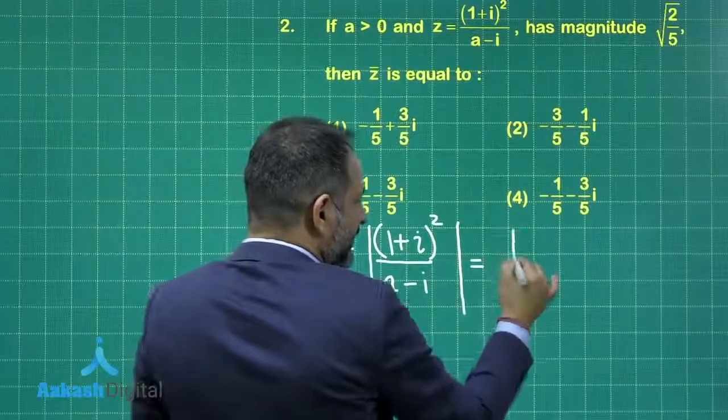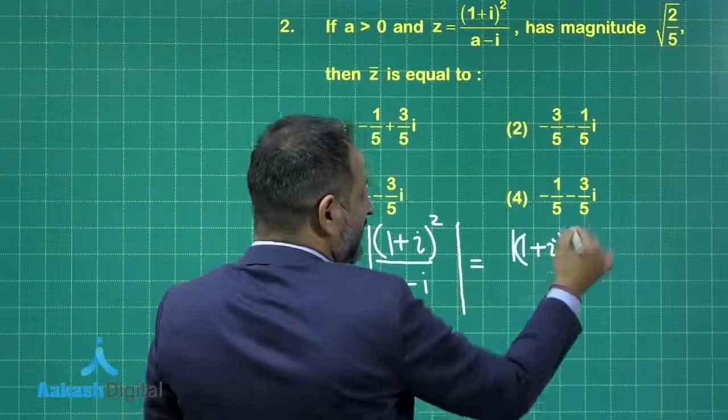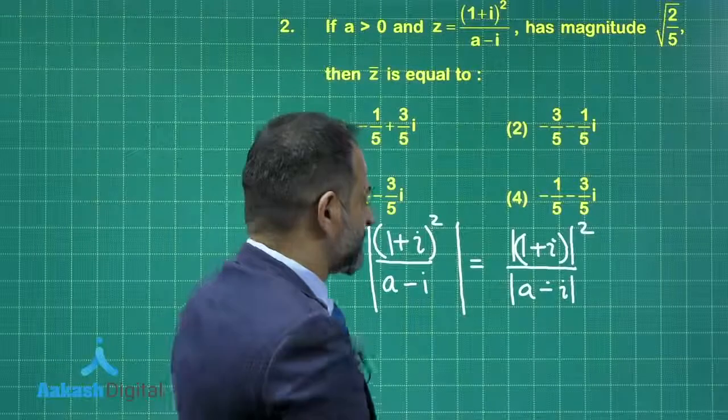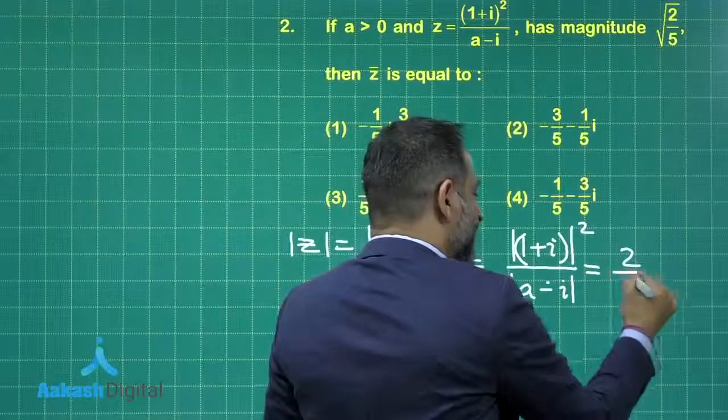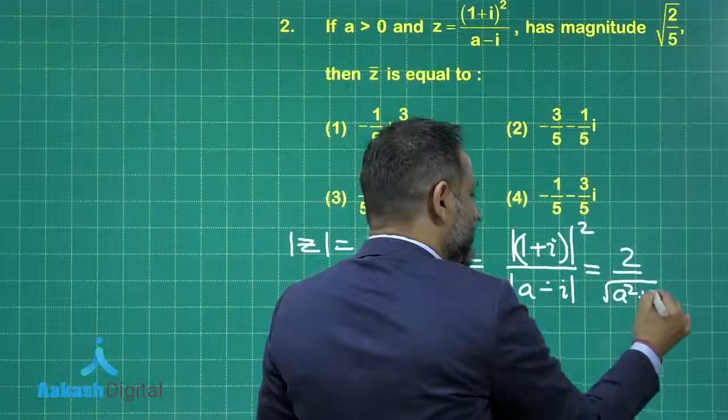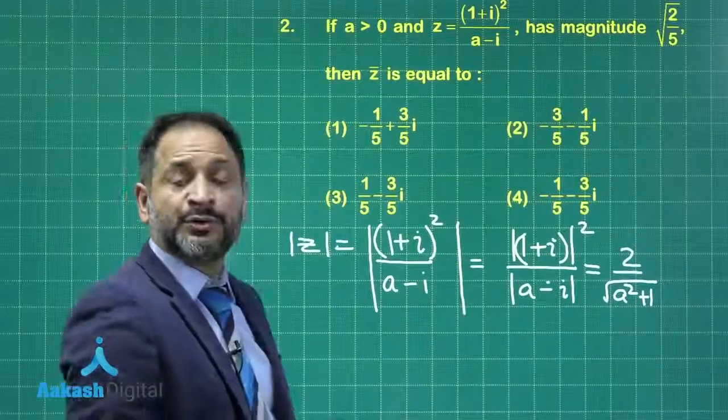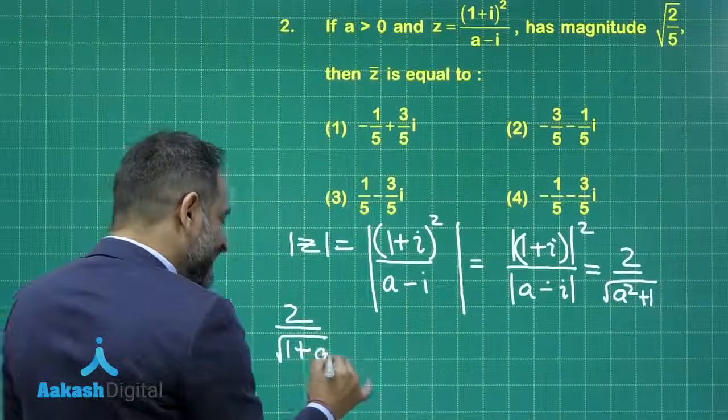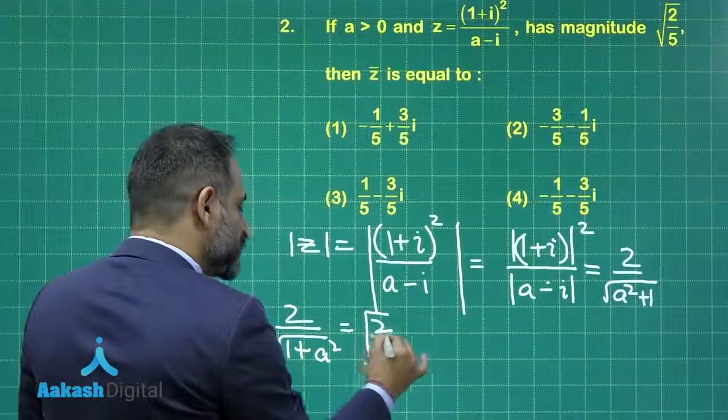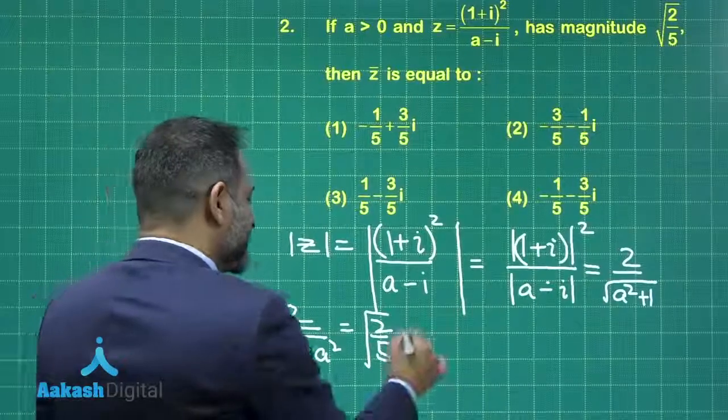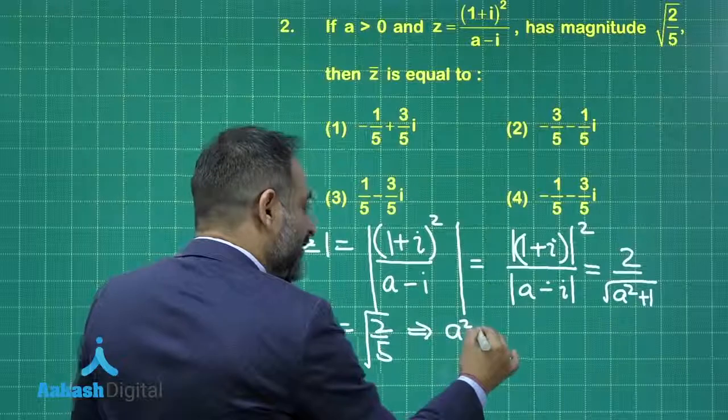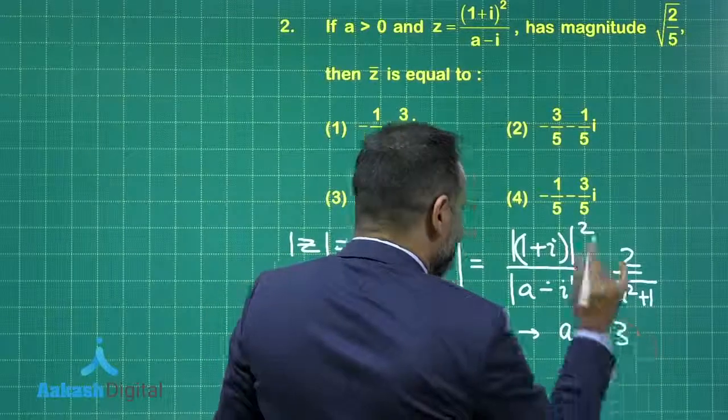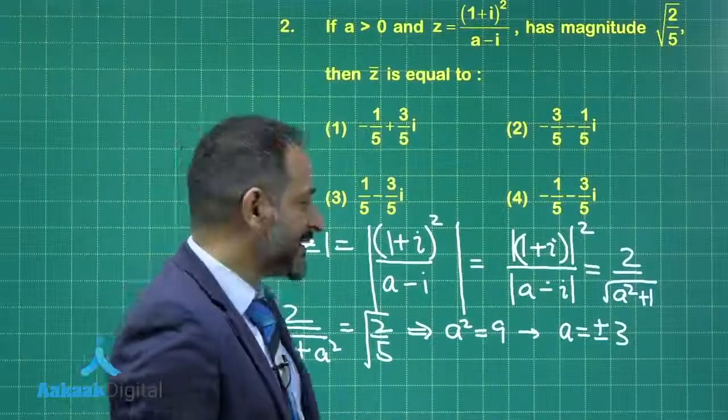Here we have modulus of z is equal to modulus of 1 plus iota whole square upon a minus iota. The modulus of numerator has got value equal to 2 and the denominator will give you a squared plus 1. This modulus is having value root of 2 by 5. Now equating these two, we have 2 upon 1 plus a squared is equal to root of 2 by 5. Squaring on both the sides, the value of a squared will be equal to 9 and from here we have a is equal to plus minus 3. It is given that a is positive, so we will take only a equal to 3.